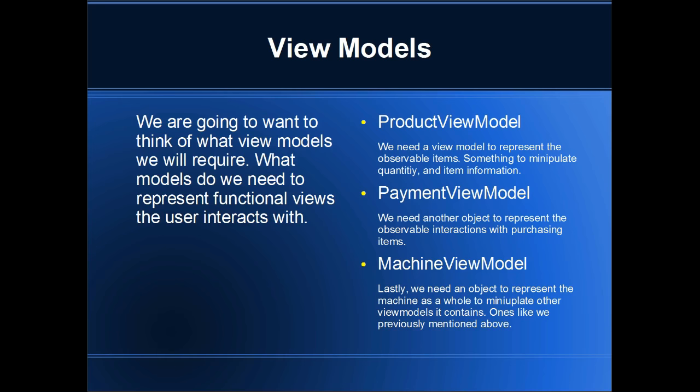Next, we're going to need a payment view model. We need another object to represent observable interactions for purchasing items. The payment view model is essentially going to be the object we interact with for inserting change, collecting payments, and then even retrieving payments.